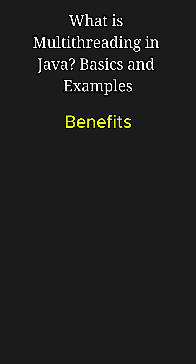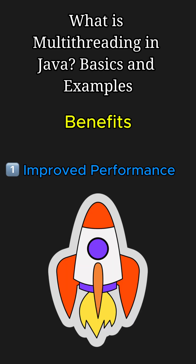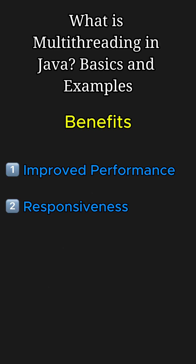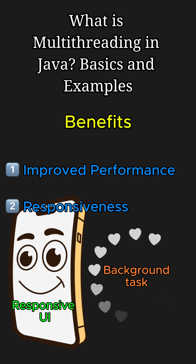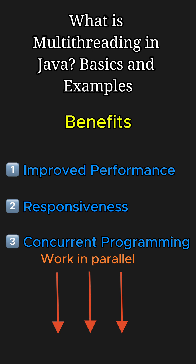Key benefits of multi-threading include: improved performance, which allows efficient use of CPU by running multiple operations simultaneously; responsiveness, which keeps the program responsive especially for tasks like UI updates while performing background operations; and concurrent programming, which facilitates handling multiple independent tasks or processes in parallel.